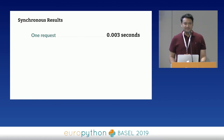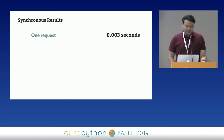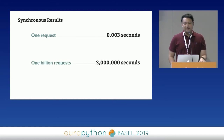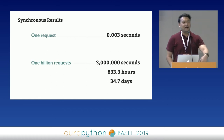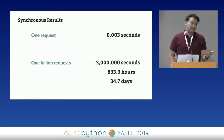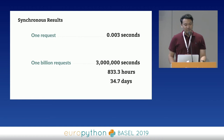Is three milliseconds good or bad? If we take three milliseconds and multiply it by one billion, that comes out to three million seconds — which is 833 hours or about 34.7 days. So if we were to say we'll have this done in about a month, that's probably not going to work. We know the synchronous version isn't good enough and we need something faster.